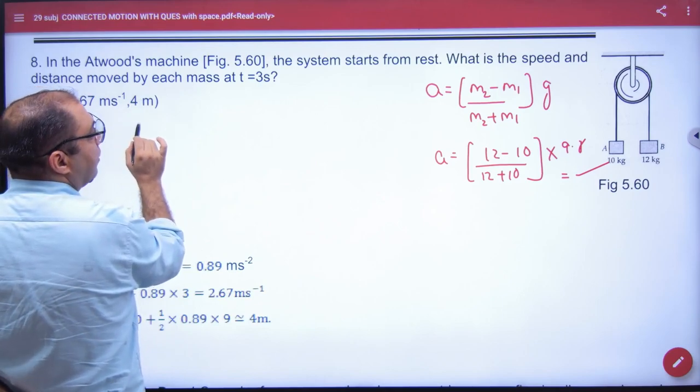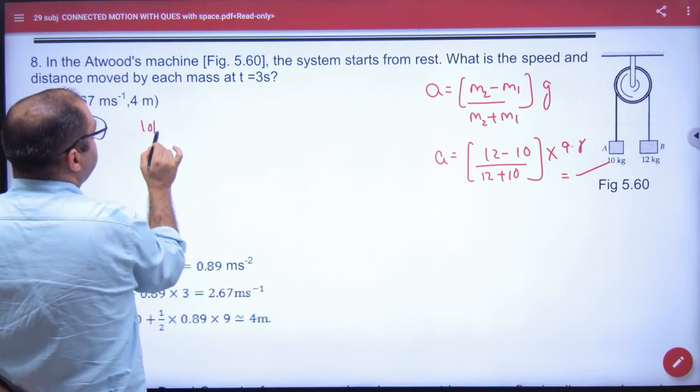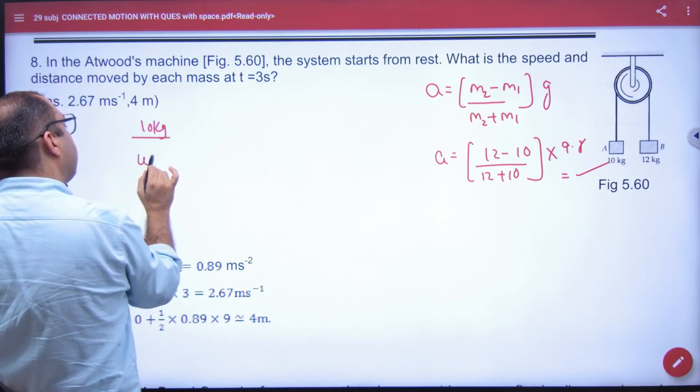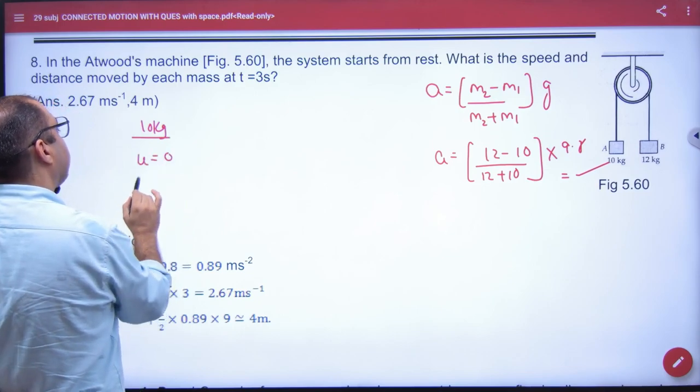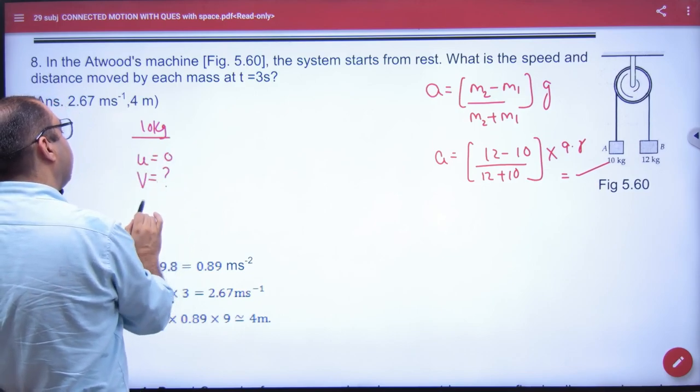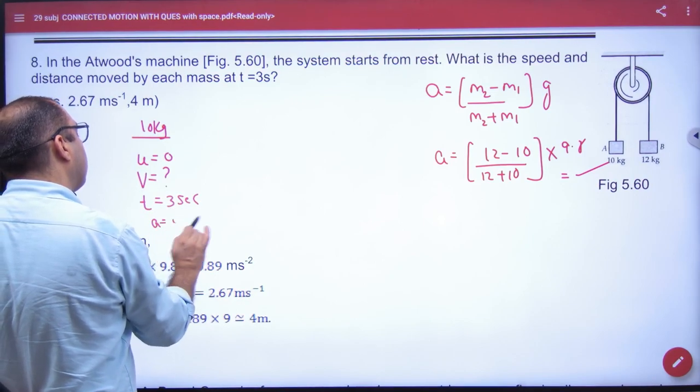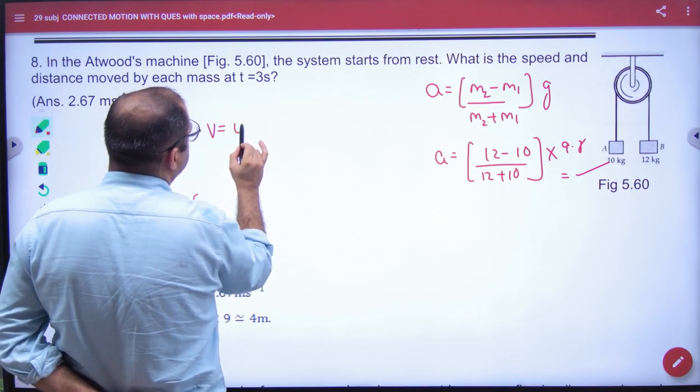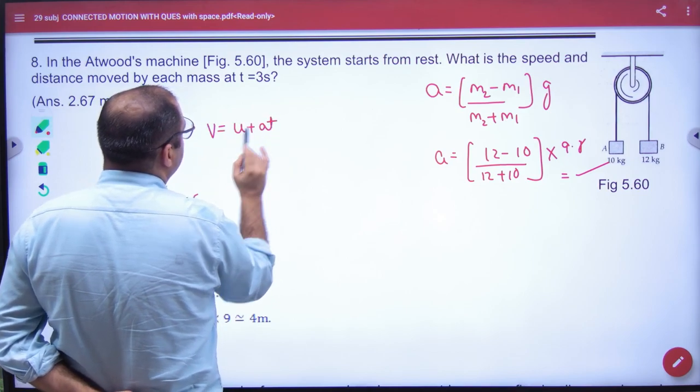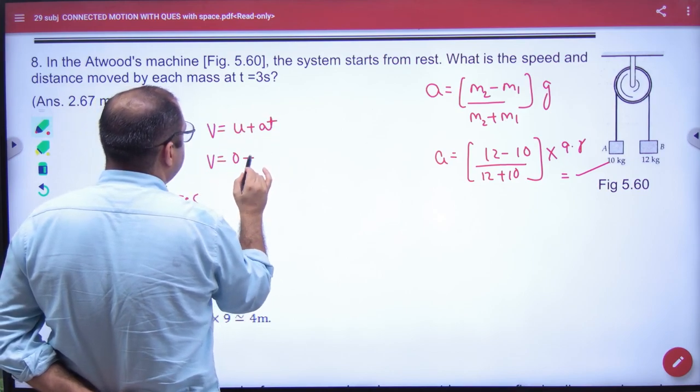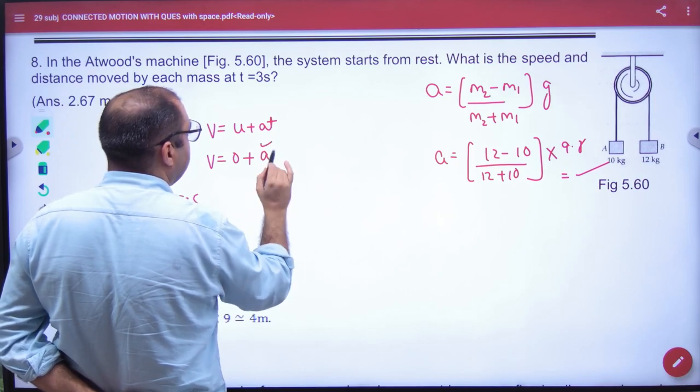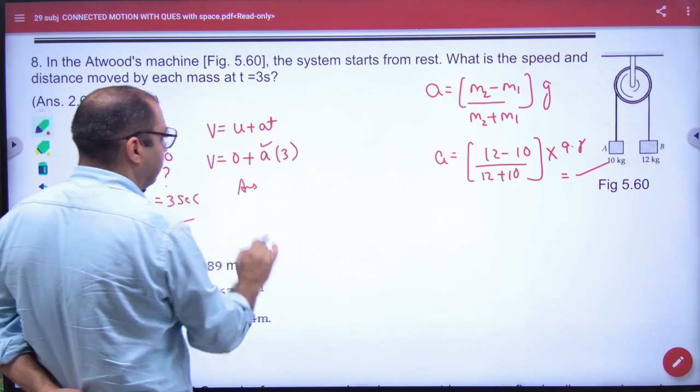Then the speed is asked. So imagine, for 10 kg block the speed is asked. Initially, where was the body? Rest. You have to take V and you know the acceleration question. So apply V is equal to U plus AT. So V is equal to 0 plus acceleration you will take and the time value is 3. What will come from here? Answer.